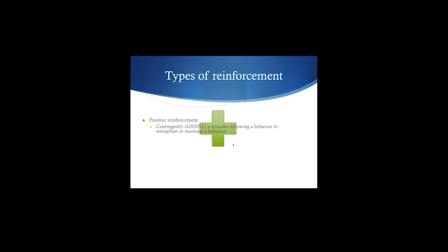The first type is positive reinforcement. When we talk about positive and negative reinforcement, remember there is no such thing as good or bad here — positive does not mean good, negative does not mean bad. Positive reinforcement is contingently adding a stimulus following a behavior to strengthen or maintain a behavior. This could be as simple as flipping a light switch and the lights come on — the light was added, and that strengthens or maintains my behavior of flipping the switch.